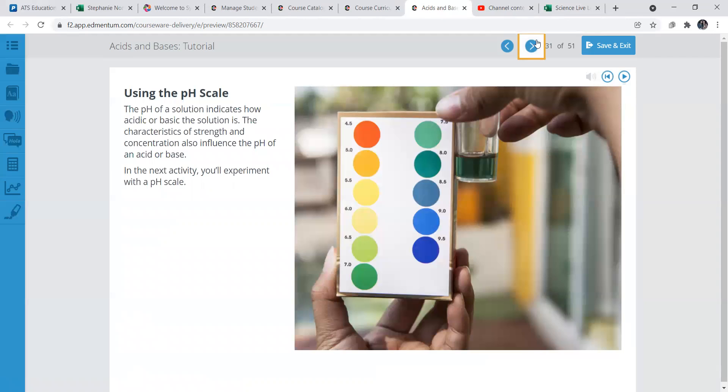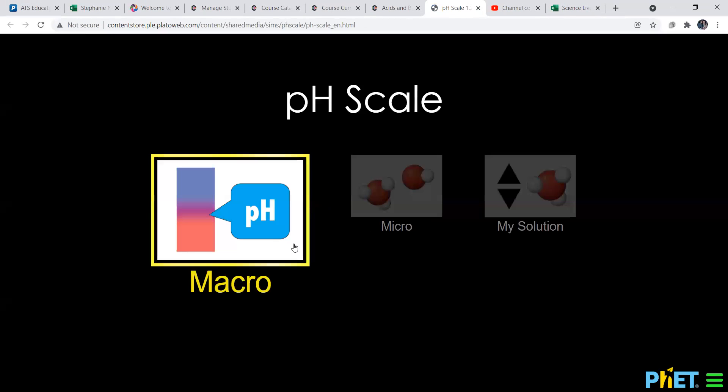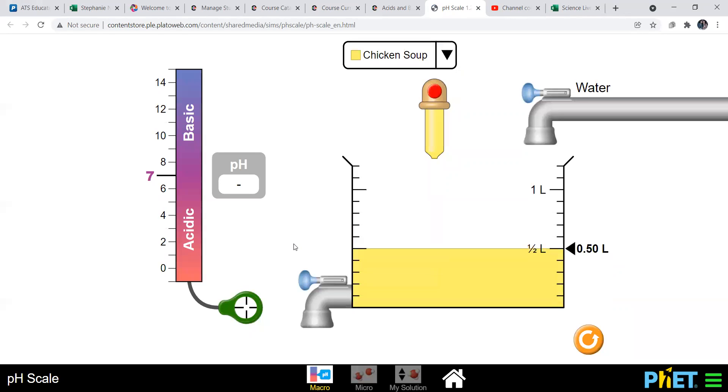So then here's some more examples. Let's keep going to the next part. pH scale. So here's the example of the pH scale. And it shows you like the different colors. Here's the pH scale simulation. So let's go to macro. It shows you the different colors on the pH scale.